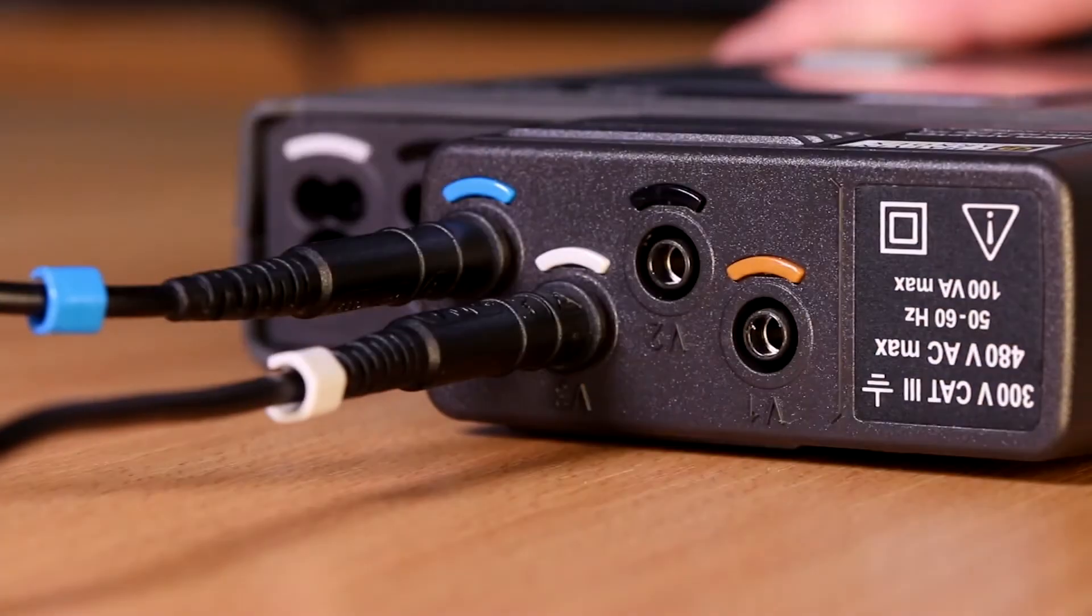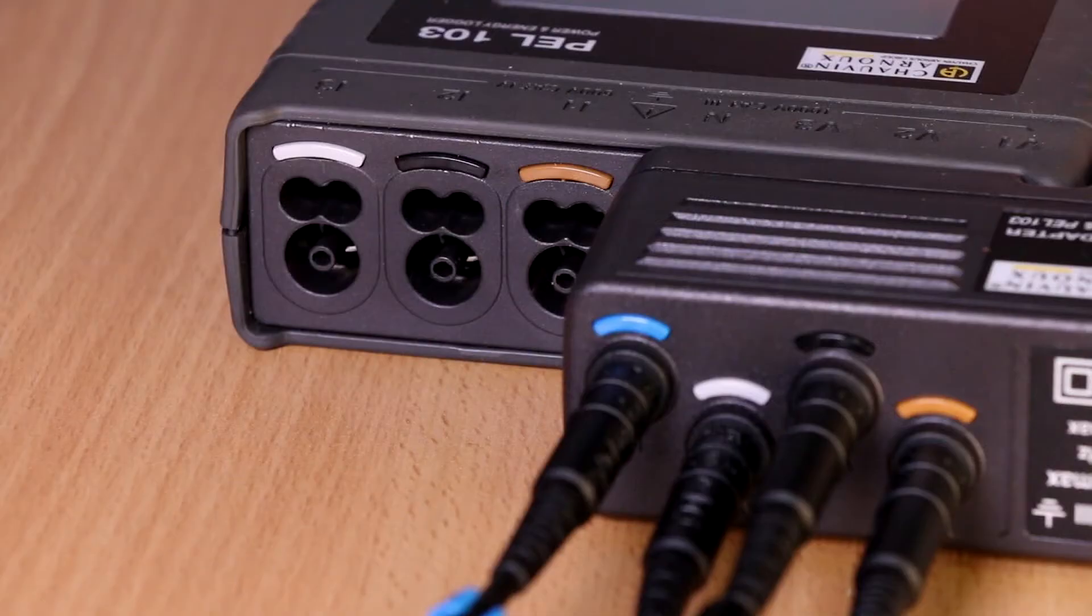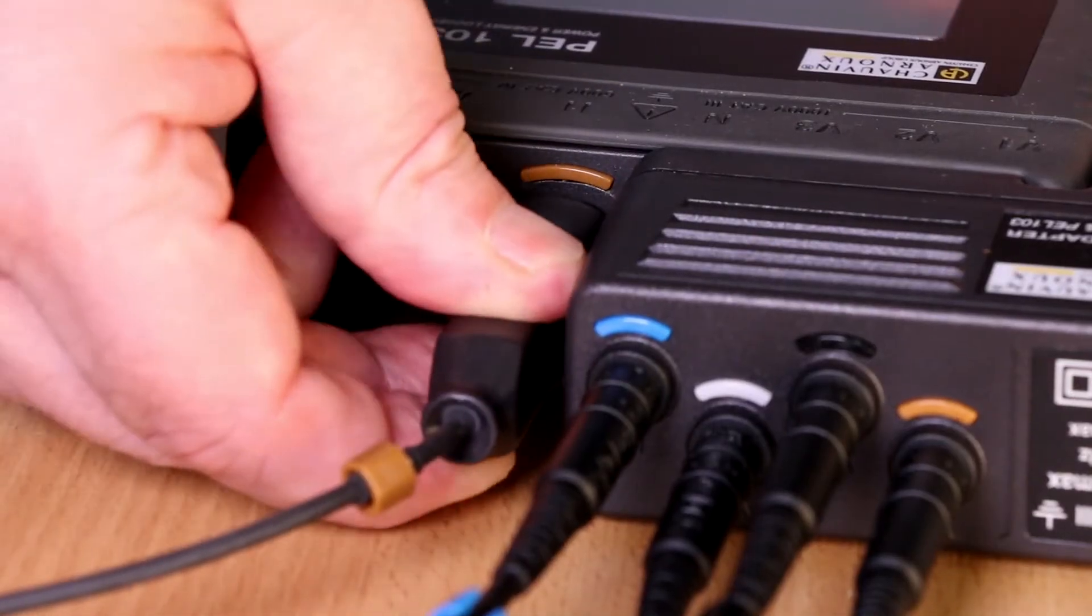First plug in the voltage measuring leads and flexible clamps. These come with a variety of different colored collars to identify which is which.